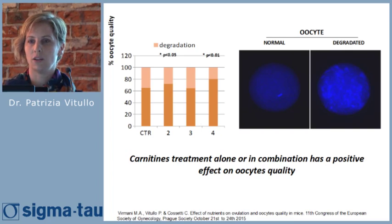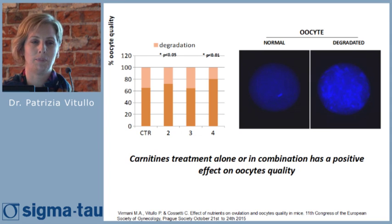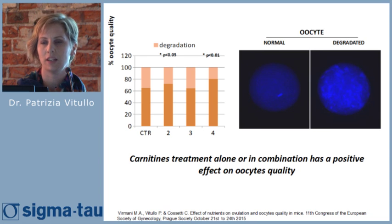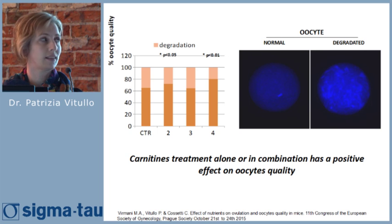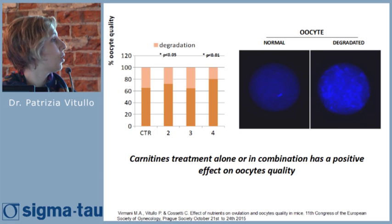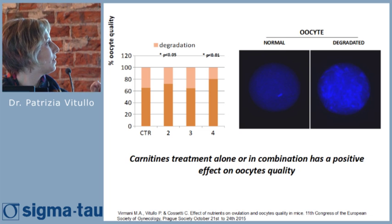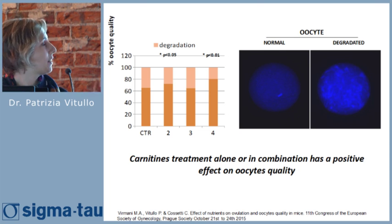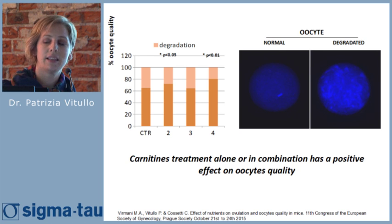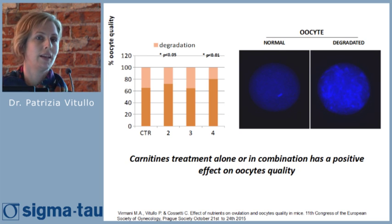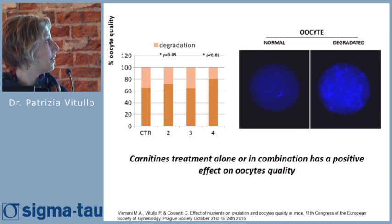To confirm these results, we stained the oocytes with DAPI, which stains specifically the DNA of the cells. In normal oocytes, we can observe the metaphase plate — the DNA is compacted. Meanwhile, in degraded oocytes, the DNA is fragmented and spread all over the cell, which can also indicate an apoptosis process.